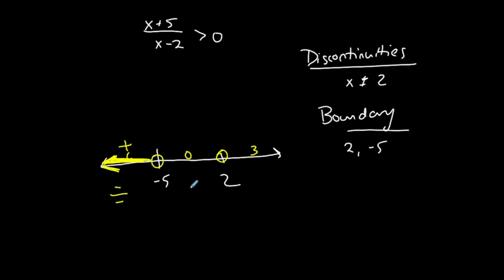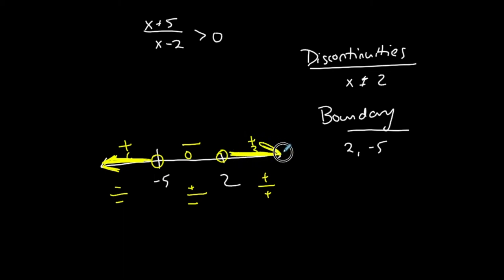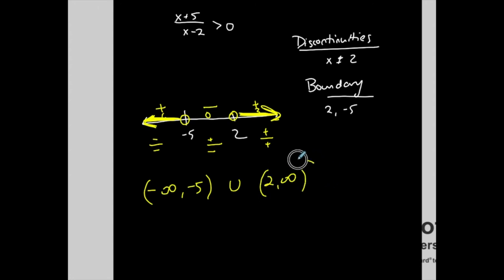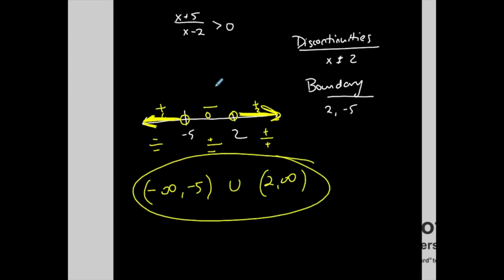Plugging in zero on the top gives positive, and on the bottom gives negative. Positive divided by negative is negative, so this interval is not part of my solution set. Plugging in three gives positive over positive, which is positive — so that is part of my solution set. Therefore my solution is everything to the left of negative five: from negative infinity to negative five, not including negative five, union two to infinity, not including two.